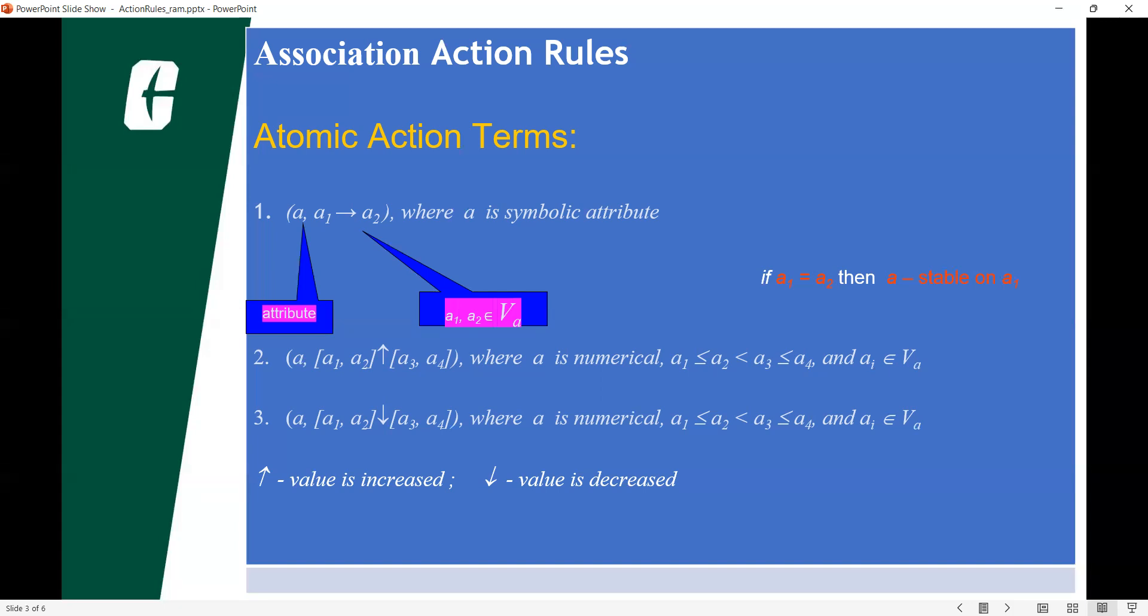An association mainly consists of two parts, which are antecedent, that is an if statement, and a consequent, that is a then statement. An antecedent is an item within the data. A consequent is an item formed in combination with an antecedent.